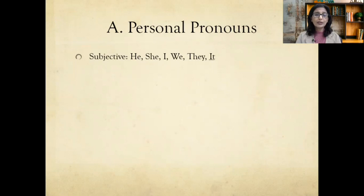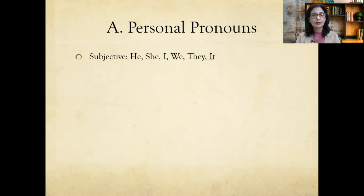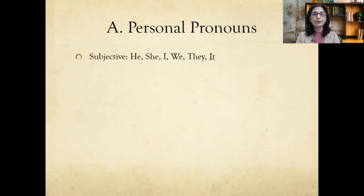Before explaining subjective and objective, remember that a complete English sentence has a subject, a verb, and an object. For example, 'He likes mangoes' — 'he' is the subject, 'likes' is the verb, and 'mangoes' is the object. A subjective pronoun is used in place of the subject. Examples include he, she, I, we, they, and it — as in 'He is a good boy' or 'She is going to tell you.'